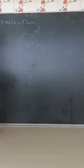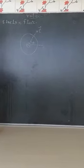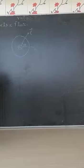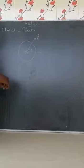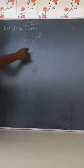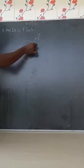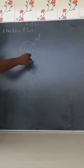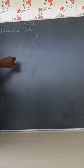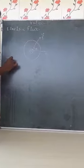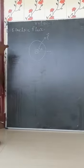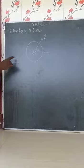Electric flux — definition for electric flux. Electric flux is defined as the total number of electric lines of force passing through a given area. Suppose this is a surface — an imaginary surface. In that imaginary surface, you are going to consider a small area. The total number of electric lines of force passing through that small area is known as electric flux.